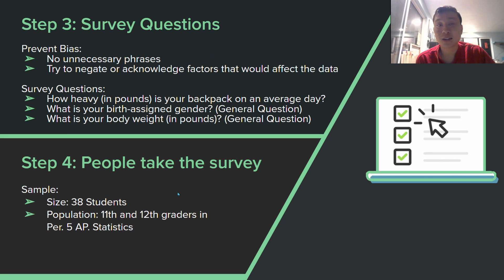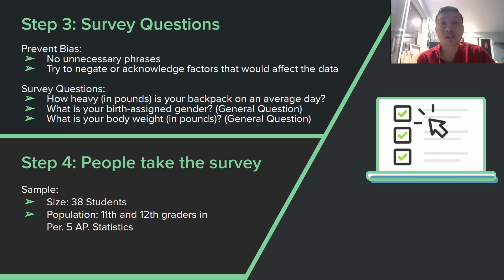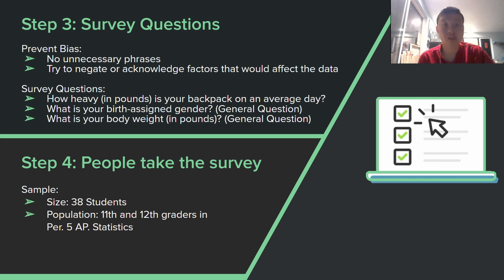Survey questions — no bias, three questions. How heavy in pounds is your backpack on an average day? That was the personal question. The two general questions I used for my statistical analysis were: what is your birth and body gender, and what is your body weight in pounds? We took the survey in class with 38 students — 38 data points, 11th and 12th graders, Period 5, AP Statistics. No randomization.